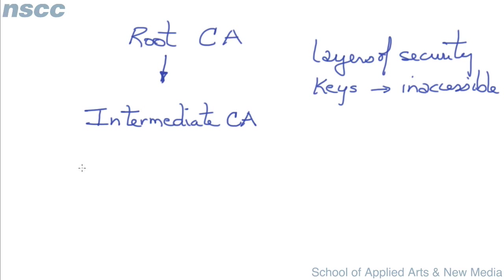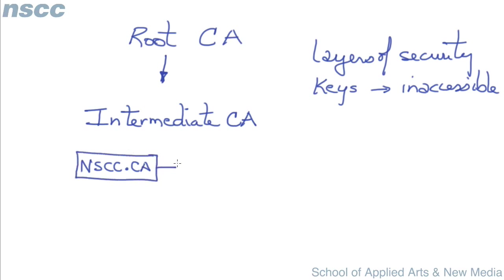So let's suppose we look at our organization nscc.ca. It can now make a certificate signing request to an intermediate CA — we'll just call this ICA.